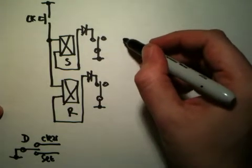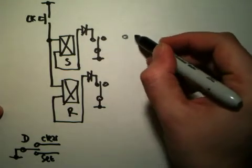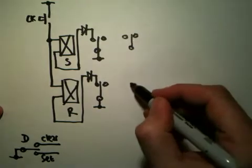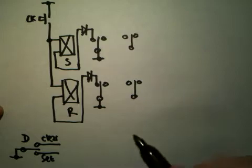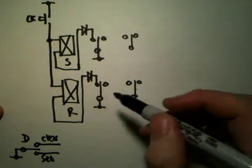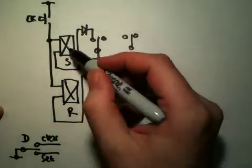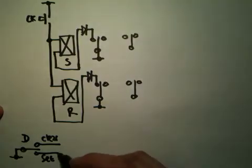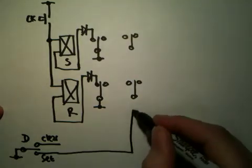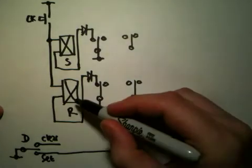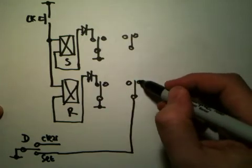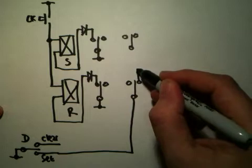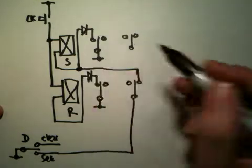Part of the way that we actually do this is that we have a separate set of contacts on here and on here. And so, when we actually want to set the set relay, this set input actually has to go through the contacts on the R relay first. And only if that one happens to be off is it allowed to come in and set the set relay like this.